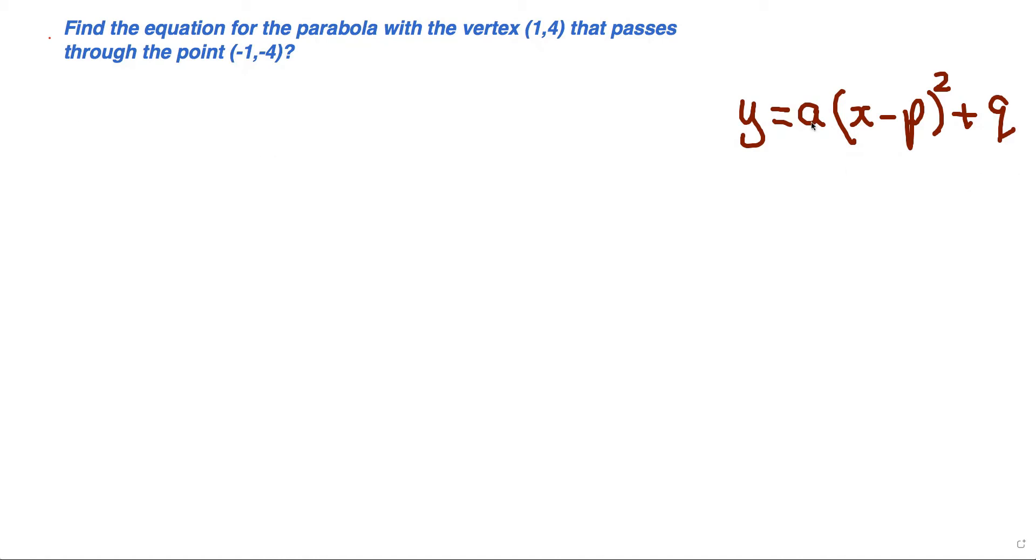The equation of the parabola is given as y = a(x - p)² + q. The vertex is always (p,q).